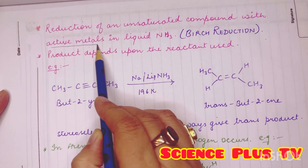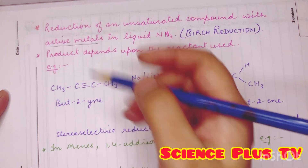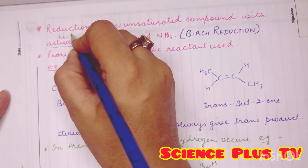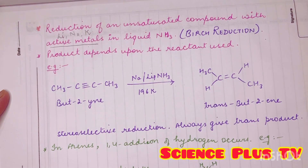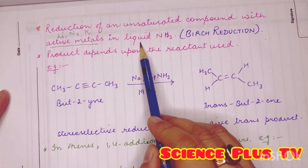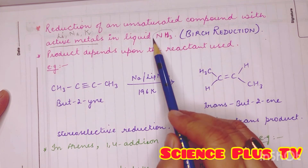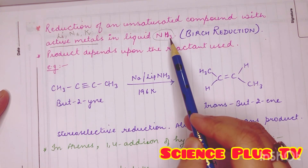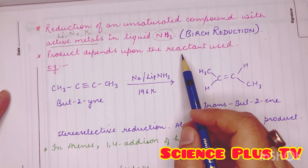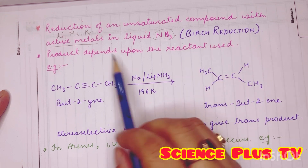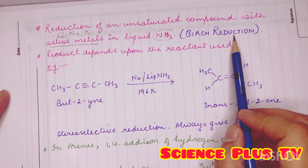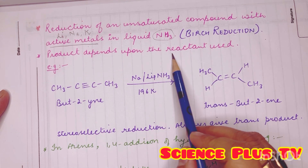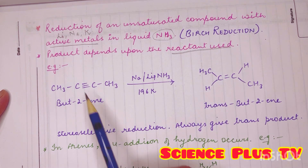Now, what are these active metals? Everybody knows — lithium, sodium, potassium. These are the active metals, used in the presence of liquid ammonia. Liquid ammonia is the reagent used. The products of this particular Birch reduction depend upon the reactant used.